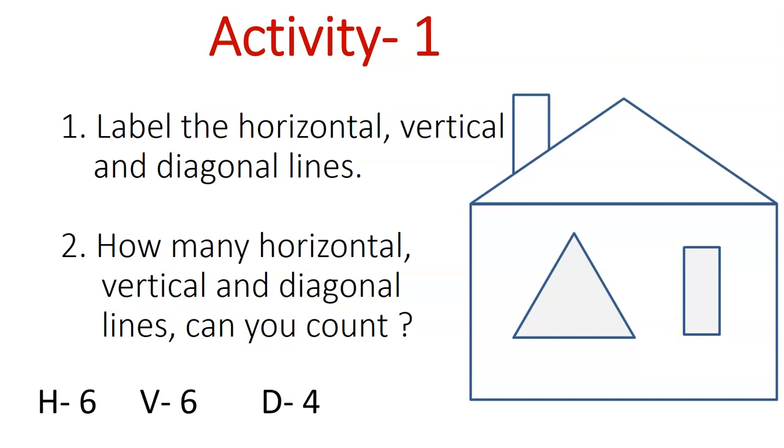And finally, there are four diagonal lines: one, two diagonal lines in the roof, and three, four - another two lines here on the triangle. Did you get all the correct answers? Great job.